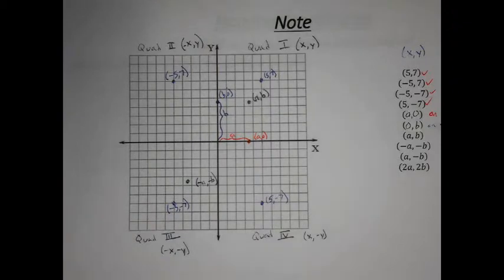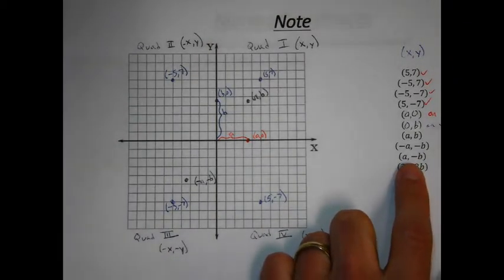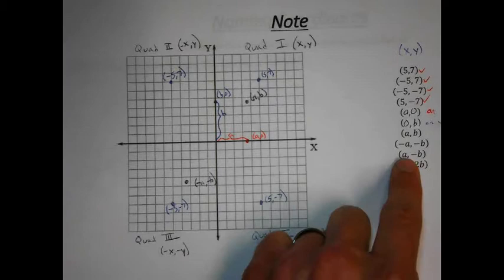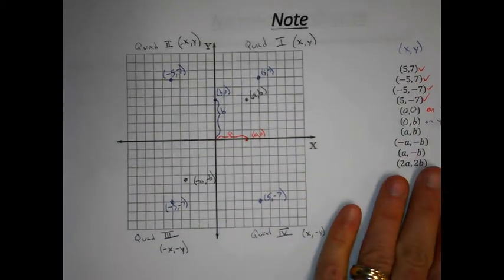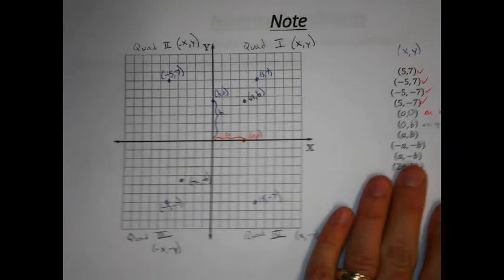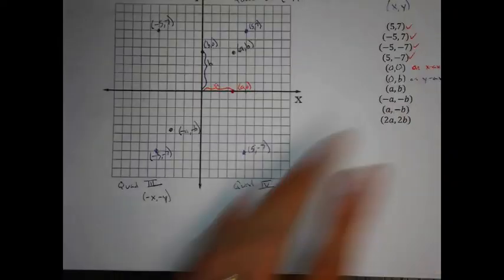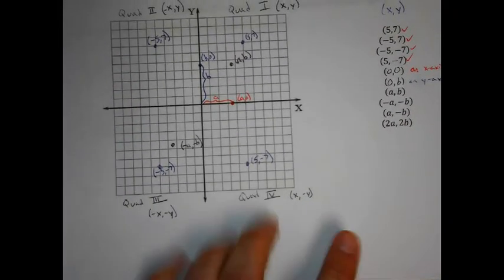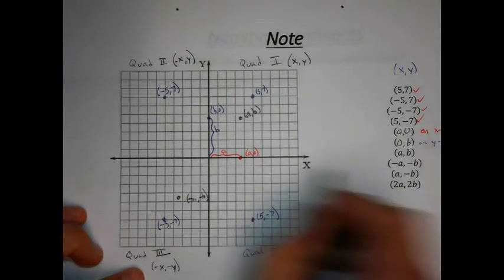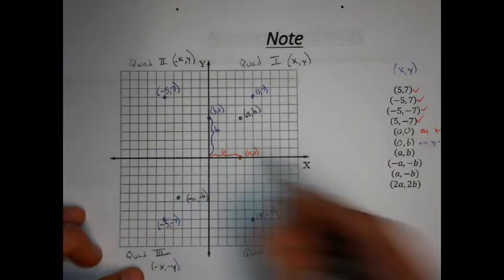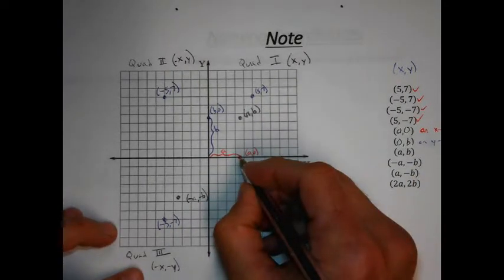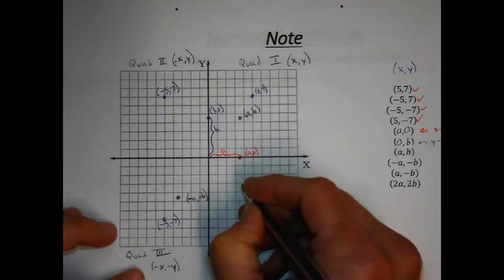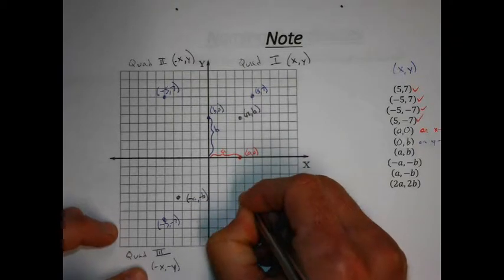What about (A, -B)? That's A in the positive direction and B in the negative direction. Just by looking at the ordered pair, you can tell it ends up in Quadrant 4. We go out A — that 3 and change distance — and then negative B — the 4 and change distance going down. That's where (A, -B) is.